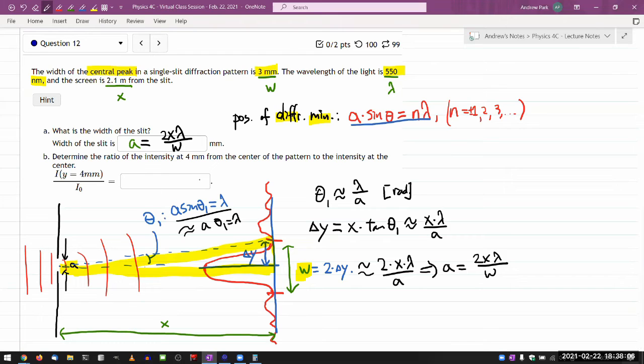Hopefully I didn't make any mistakes. Okay, any questions on this part? Nothing? Let me move on to part B. Determine the ratio of the intensity at 4 millimeter from the center of the pattern to the intensity at the center.